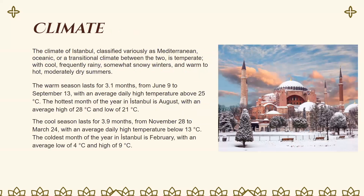The climate of Istanbul is classified as Mediterranean, oceanic, and transitional — a temperate climate with cool, frequently rainy, somewhat snowy winters and warm to hot, moderately dry summers. The warm season lasts for 3.1 months, from June 9th to September 13th, with an average temperature above 25 degrees Celsius. The hottest month is August, with an average high of 28 degrees Celsius and a low of 21 degrees Celsius.